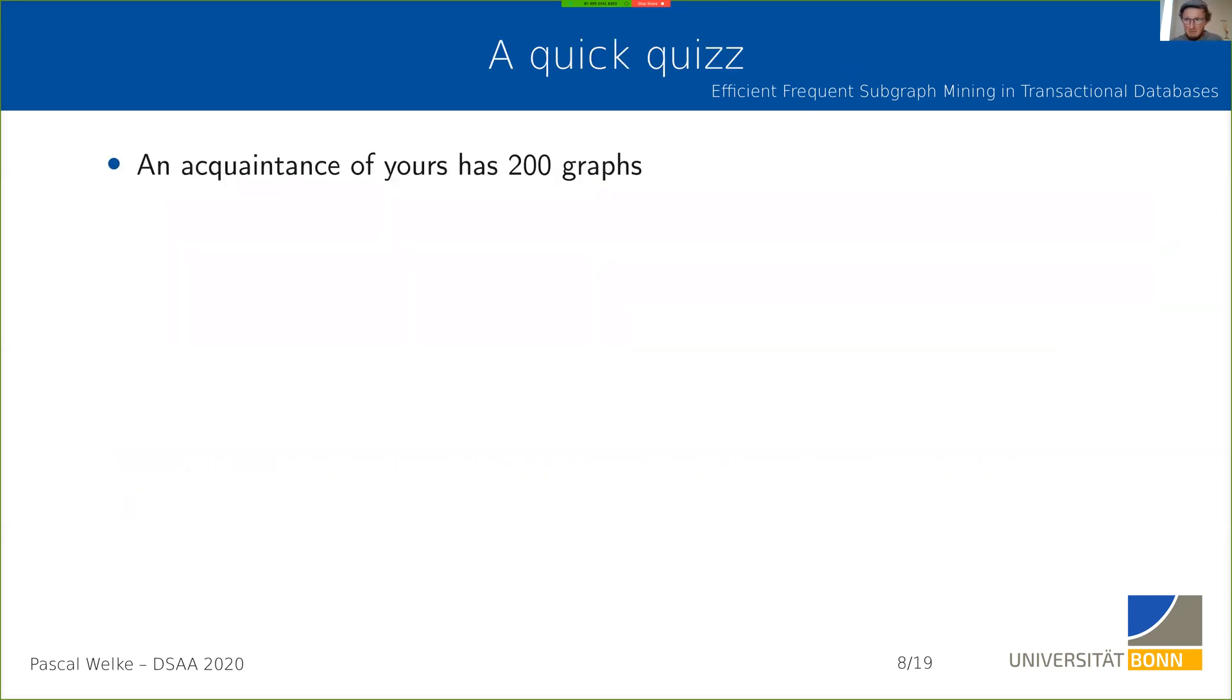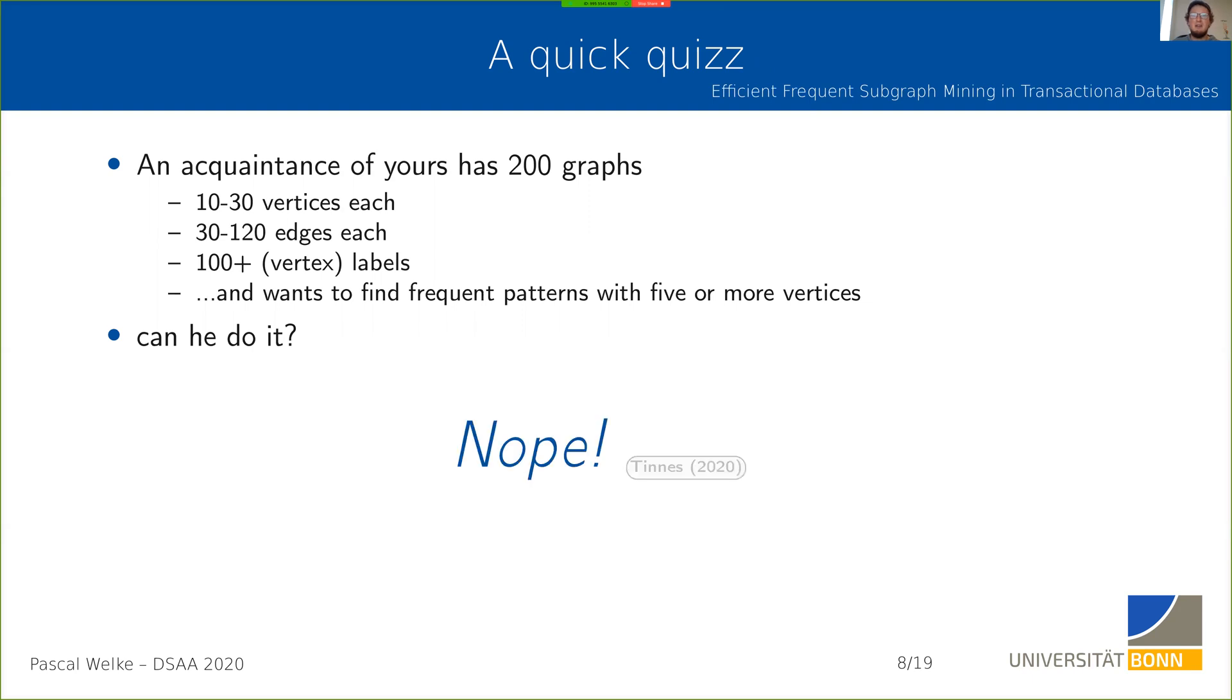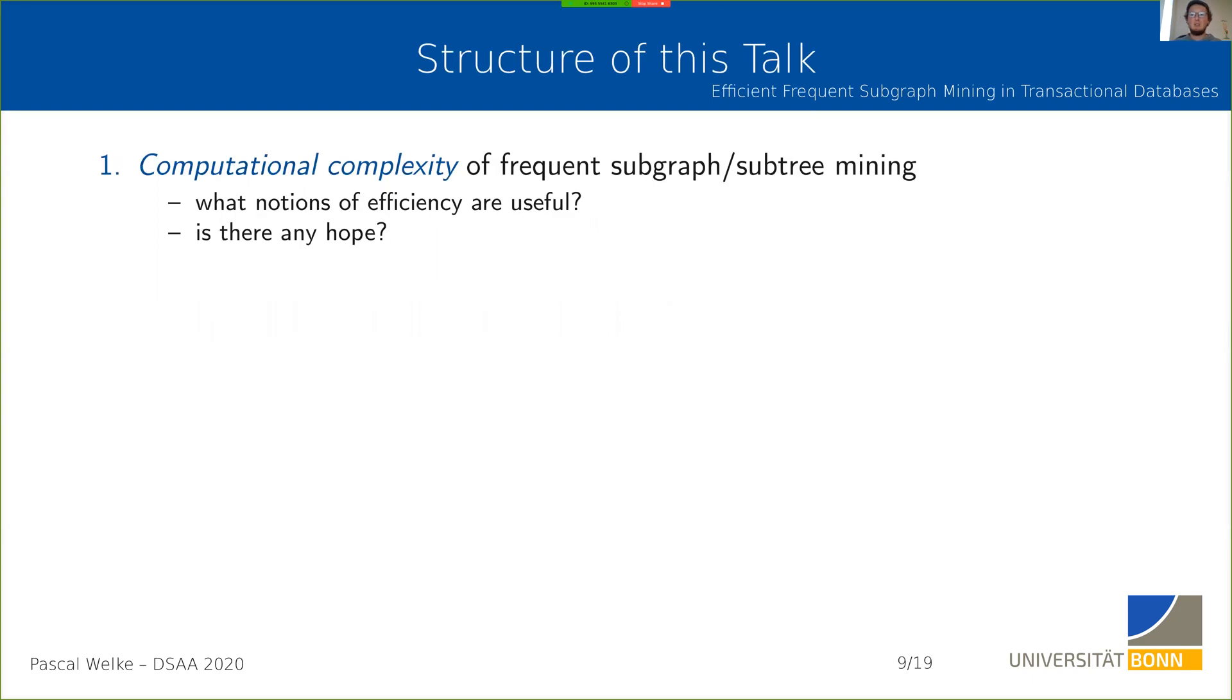Now you're wondering, we are in 2020 in a conference, why are you seeing a survey article about a problem that was solved 10 to 15 years ago? Well, all these methods enumerate a full set of frequent subgraphs. Let me ask you rhetorically: let's say an acquaintance has 200 graphs, not too large, 10 to 30 vertices each, 30 to 120 edges each, with some vertex labels, and wants to find the frequent patterns with five or more vertices in this database. Can you do it?